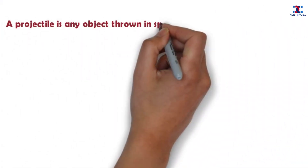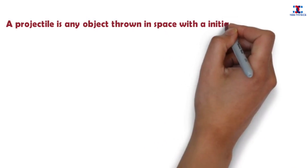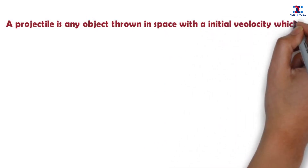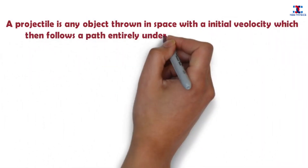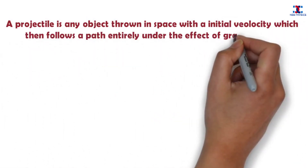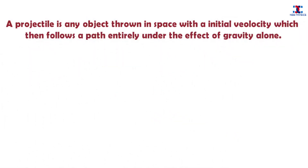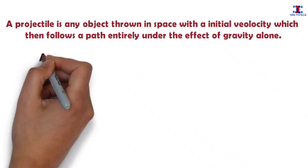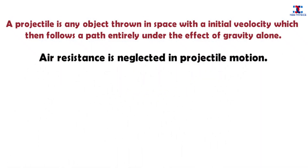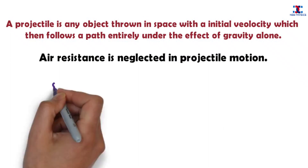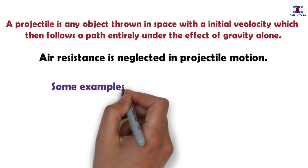A projectile is any object thrown in space with an initial velocity which then follows a path entirely under the effect of gravity alone. It must be noted that air resistance is neglected in projectile motion.